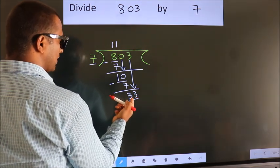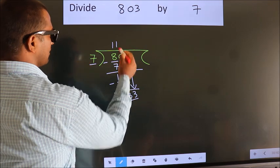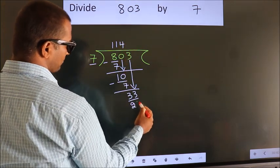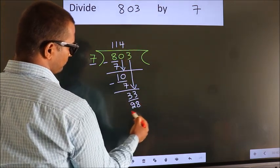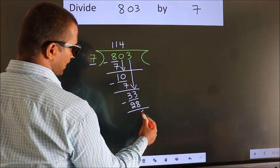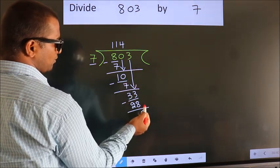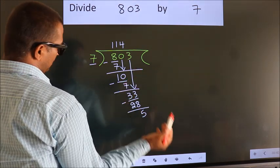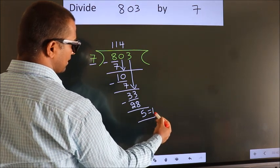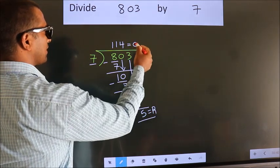A number close to 33 in the 7 table is 7 fours 28. Now we subtract — we get 5. No more numbers to bring down, so we stop here. This is our remainder. This is our quotient.